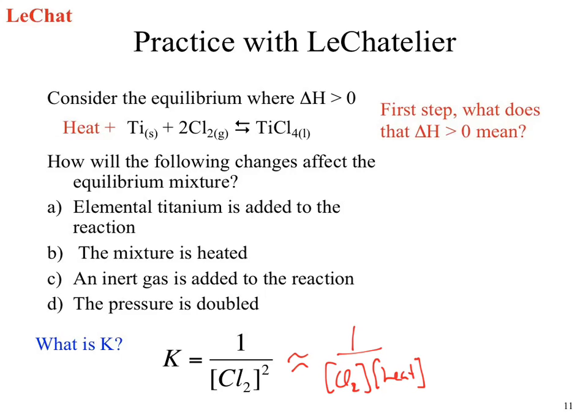What happens if we add an inert gas to the reaction? This one's actually kind of tricky. Let's assume it's an ideal gas first. We just add some other random gas to this. Does that affect my equilibrium constant? Let's add helium. Is helium involved in the reaction? No. Is it involved in the equilibrium expression? What happens when you add the inert gas? Nothing.